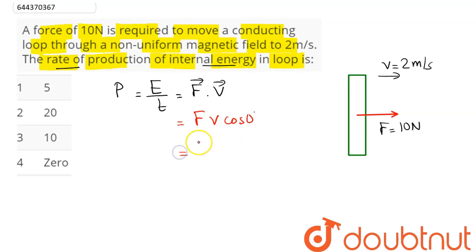So this here is 10 into 2, which is equal to we can say as 20. Hence, 20 units of energy will be produced per unit time. That is option number 2 is the correct answer.